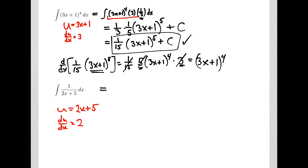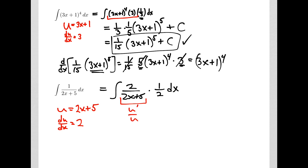So we'll rewrite it. We want an integral; we needed it to be 2 over 2x plus 5. But we can't just change the formula — we have to leave it the same value. If I simplify, the 2 over 2 would cancel. But now this is u prime over u — that's the derivative of a logarithm. So the antiderivative is 1 half times the natural log of the absolute value of 2x plus 5, plus a constant.